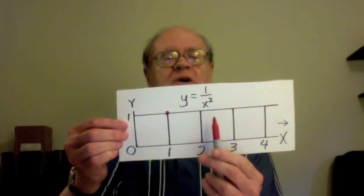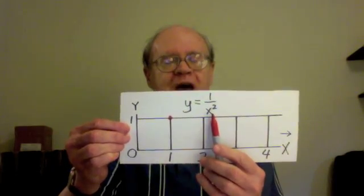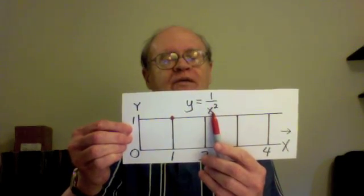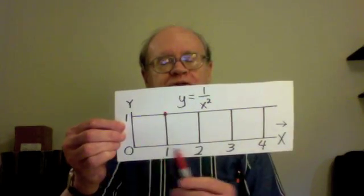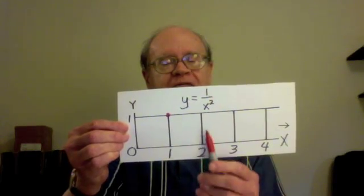When x is 2, y is 1 over 2 times 2, which is 4, 1 fourth. So I go over 2, and instead of going up 1 half, I go up not as far, only 1 fourth. That's that point.